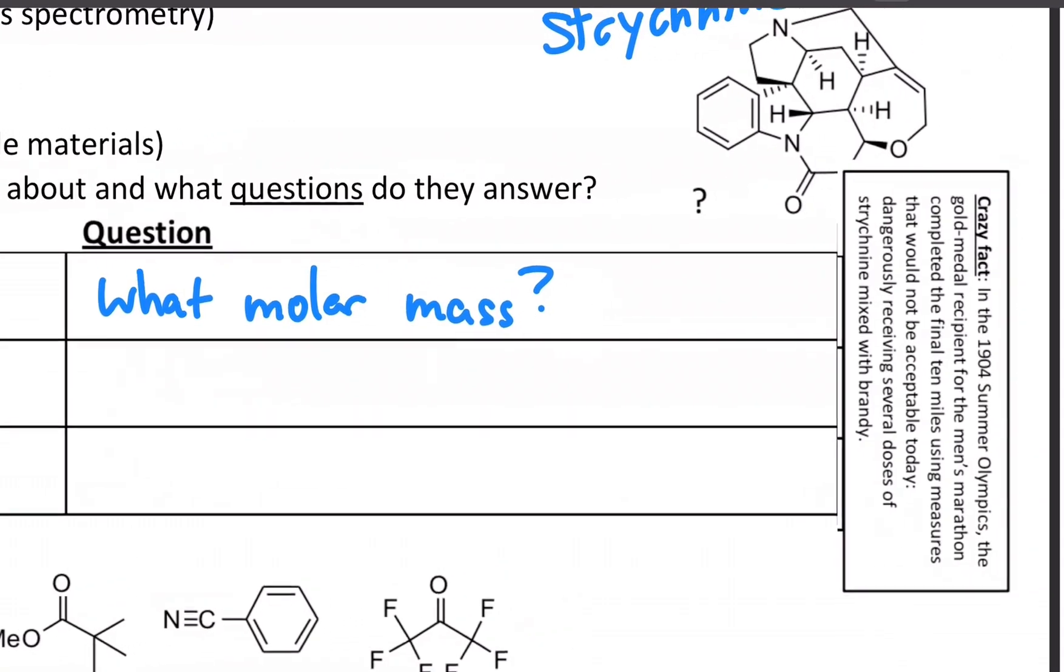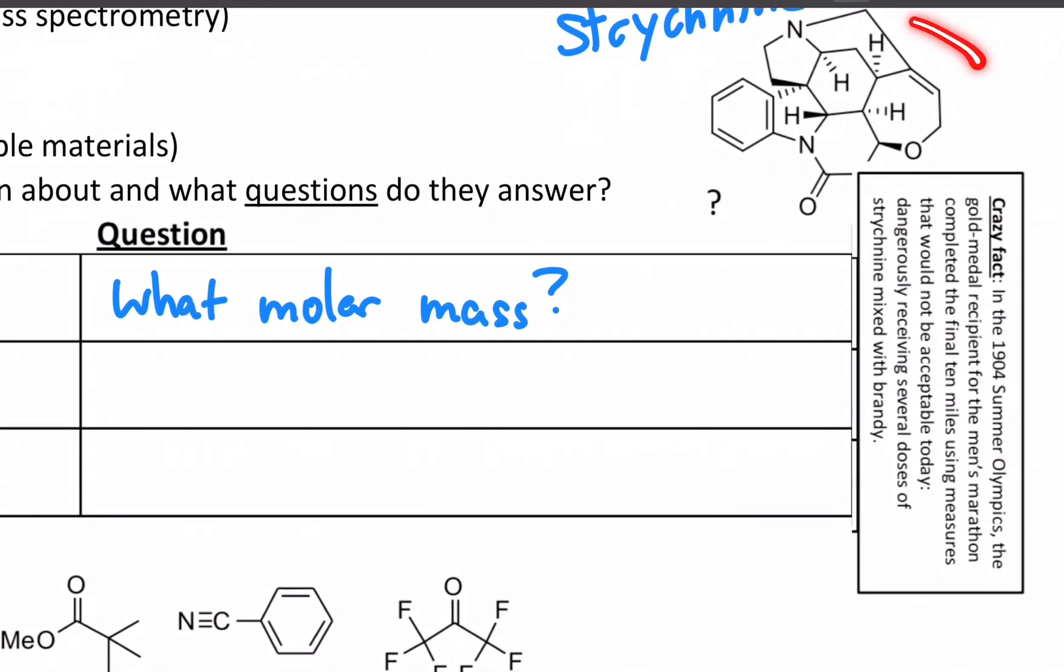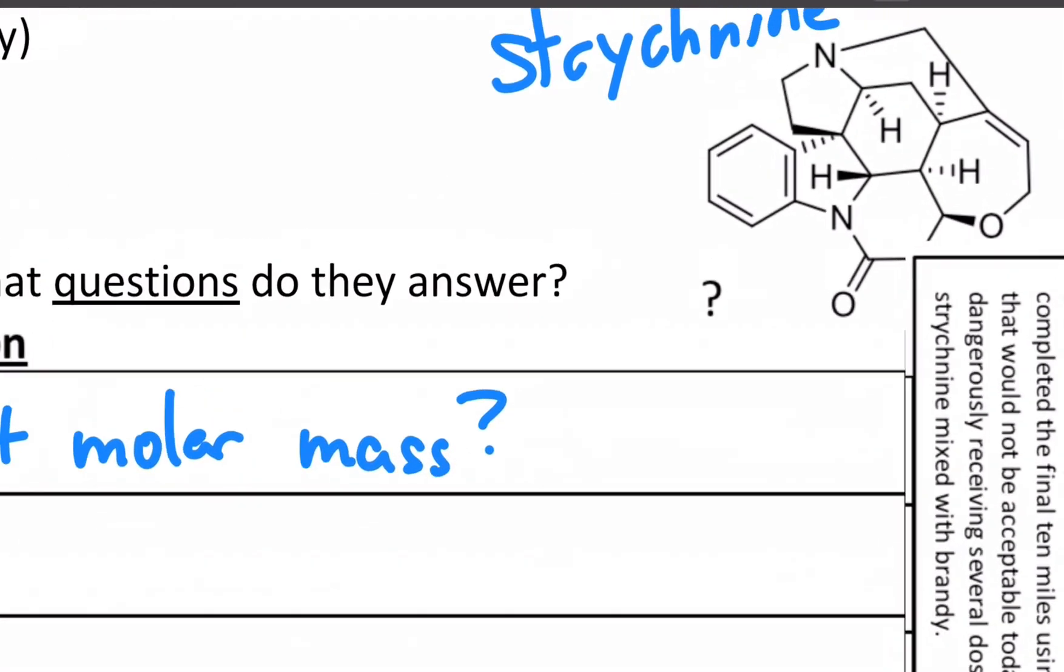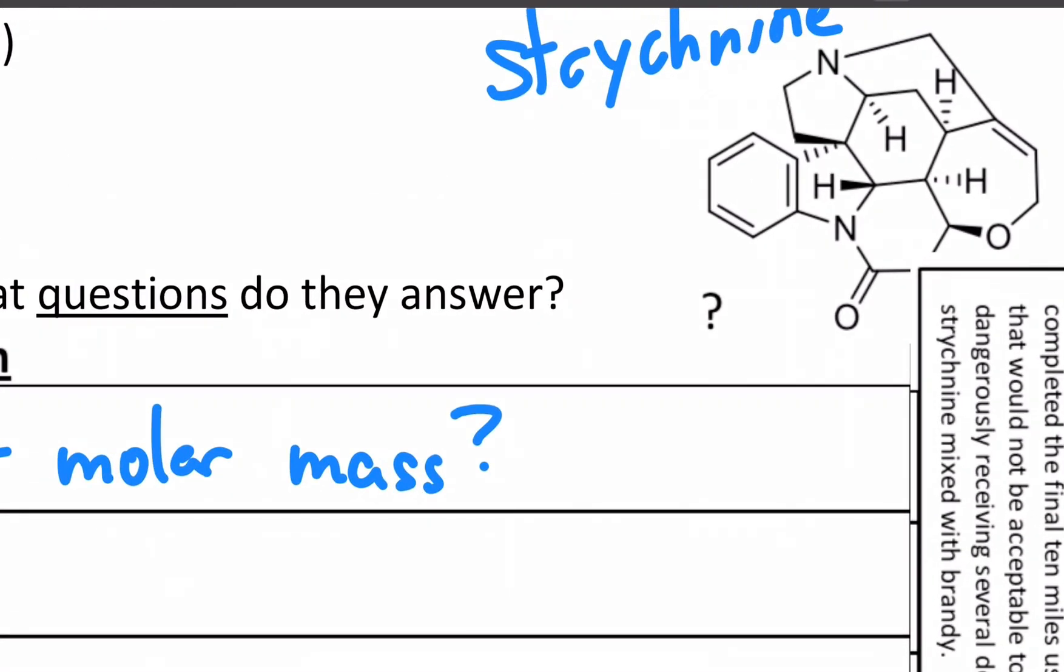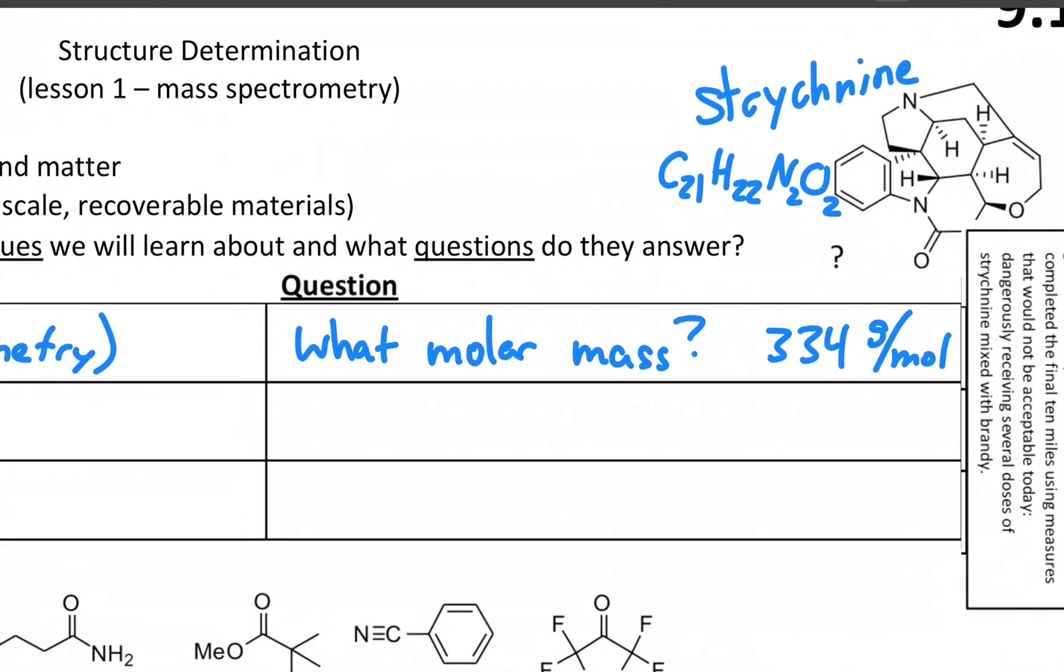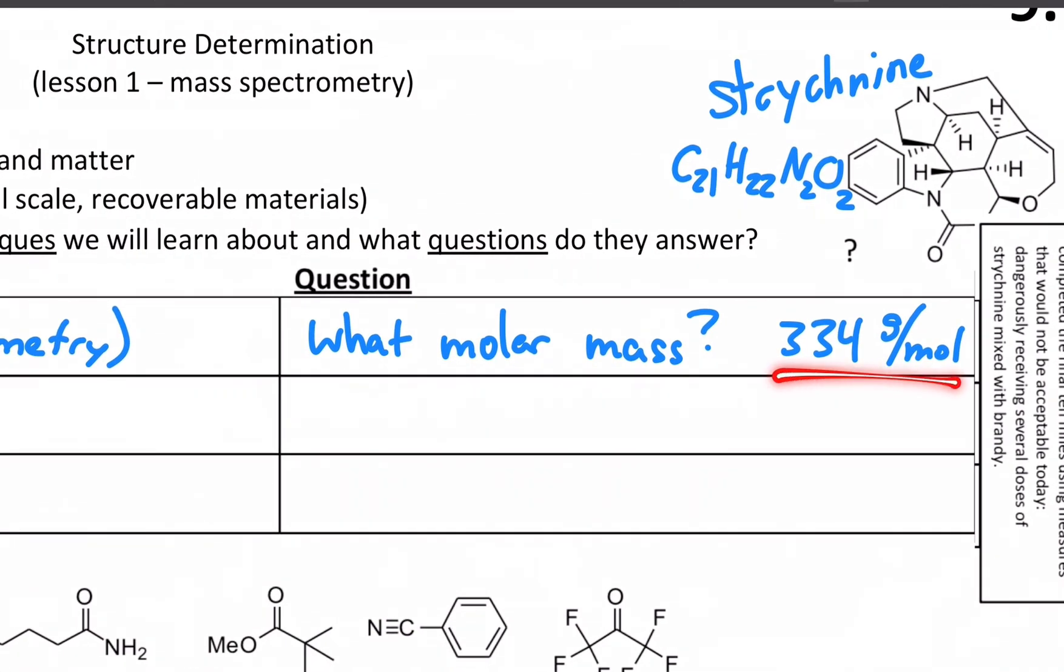We know how to interpret line structures. If we were tasked with figuring out how many carbons, nitrogens, and hydrogens are in this particular molecule, you could count them up. It would be C21, H22, N2, and O2. And if you add that up and round to the nearest whole number, you get about 334 grams per mole. So mass spectrometry would give us an output of something around that.